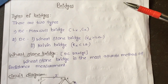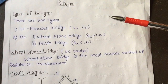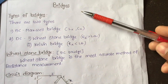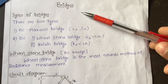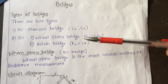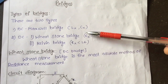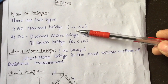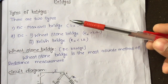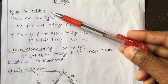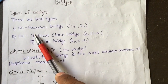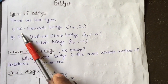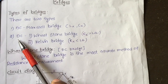Today's topic is on bridges. By using bridges we are going to measure unknown resistance, unknown capacitance, or unknown inductance. Coming to the types of bridges, there are two types: one is AC bridge and another one is DC bridge.